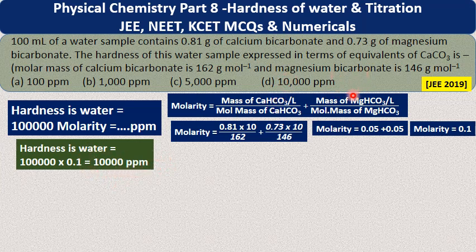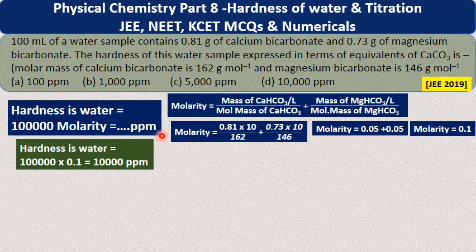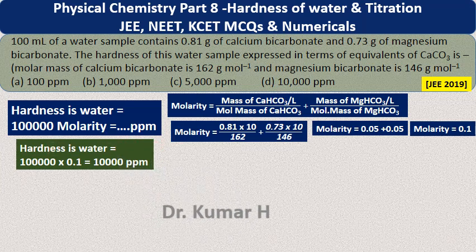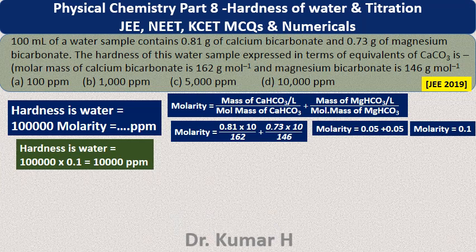The answer is 10,000 ppm — and this question appeared in JEE 2019. Using my shortcut method, you can easily find the answer. Remember: hardness of water equals 1 lakh times molarity. If you know the molarity, substitute directly; if not, calculate the molarity first, then substitute. This is the simplest way to get the answer.